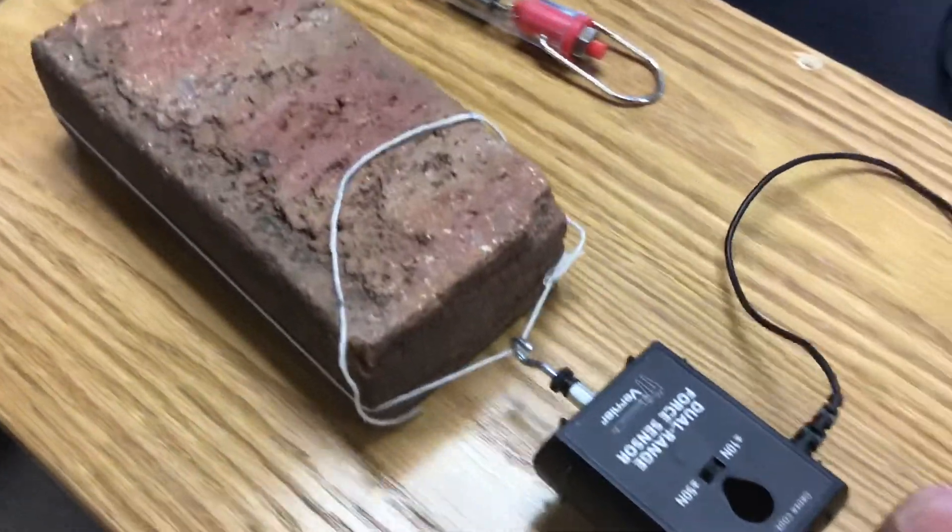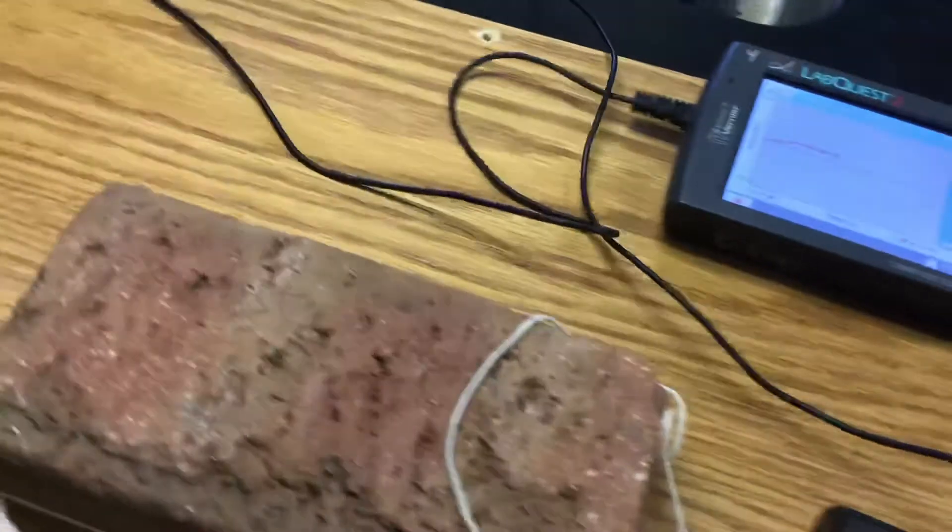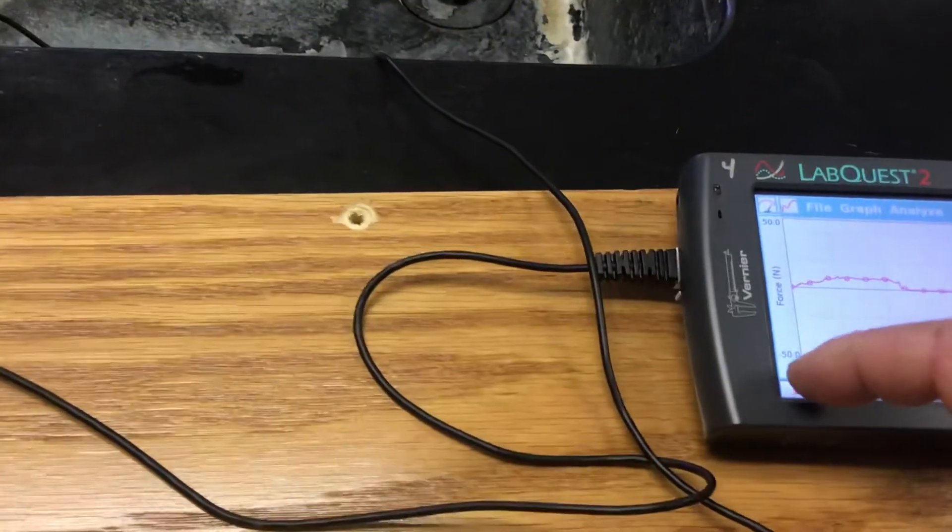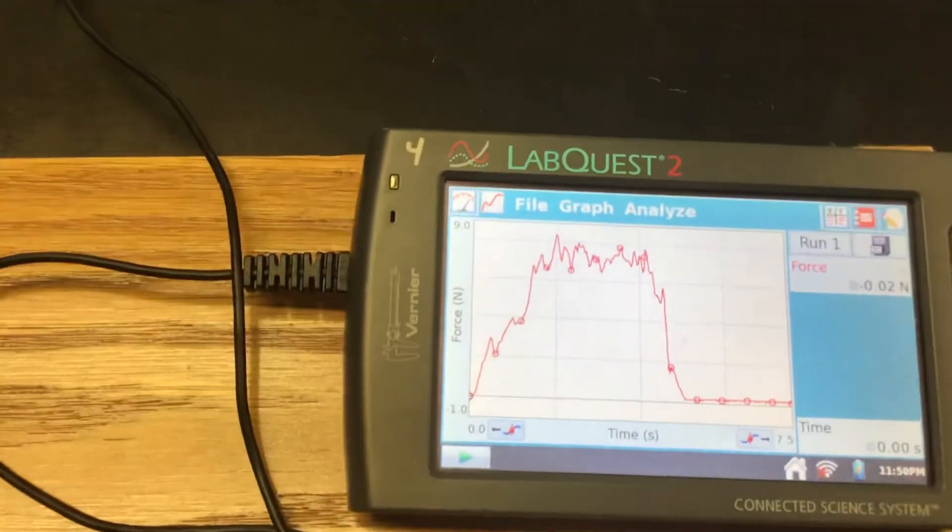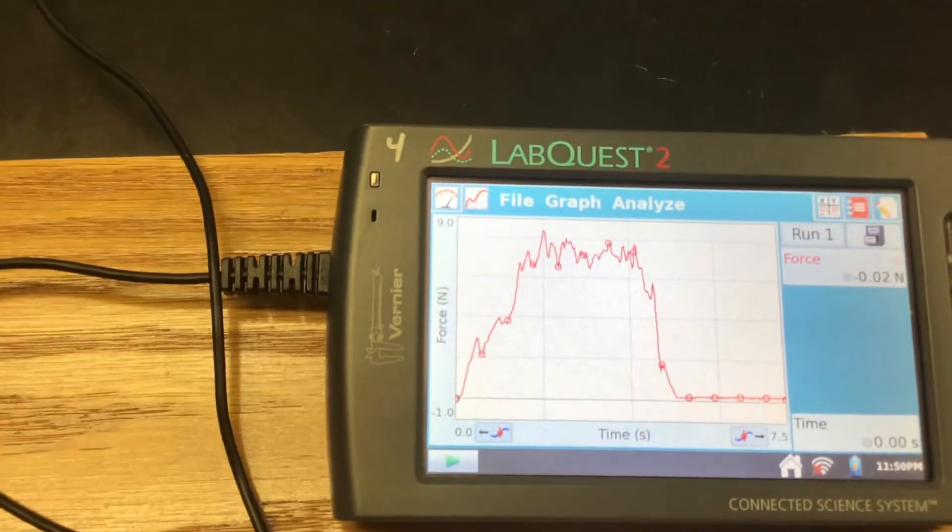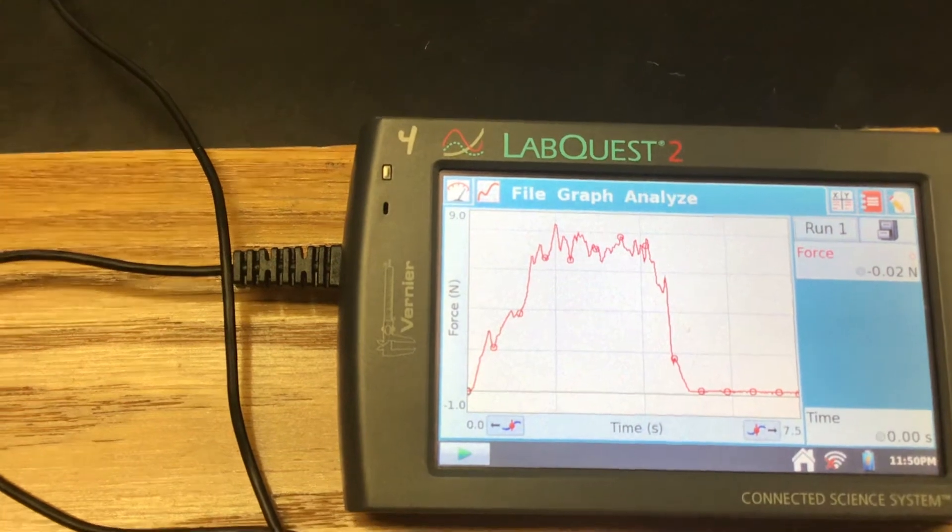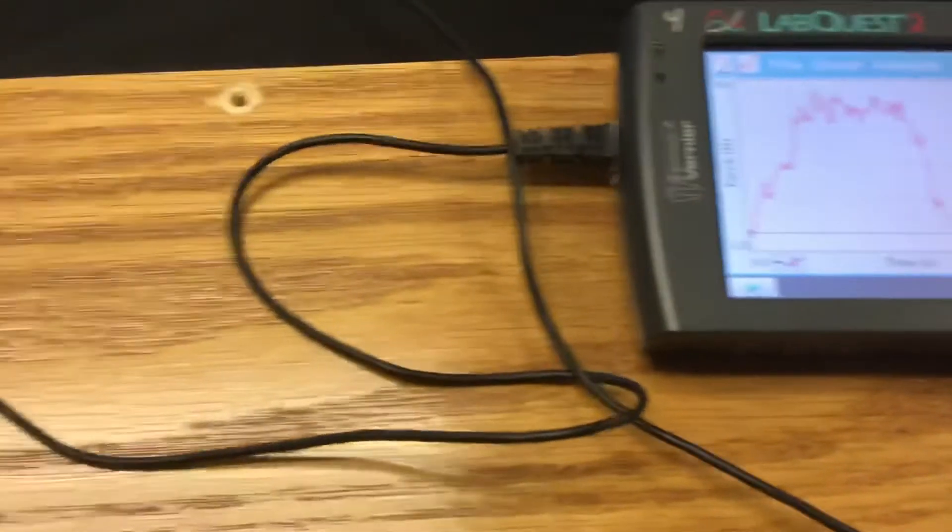Start pulling the brick. Pull it at a constant speed until you get to the end. Click on stop, and there is my graph that shows the force that it took to initiate movement and to keep it moving at a steady speed.